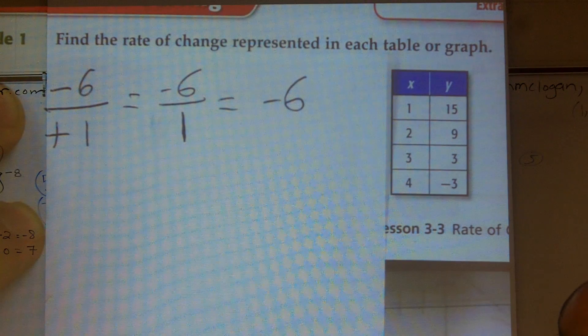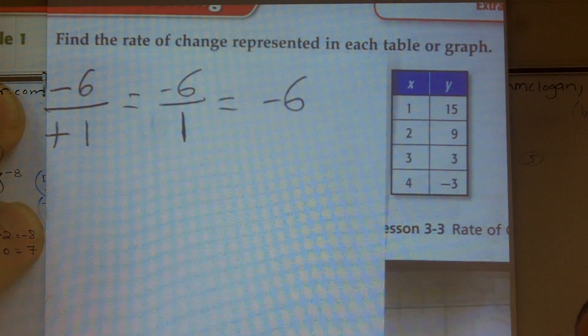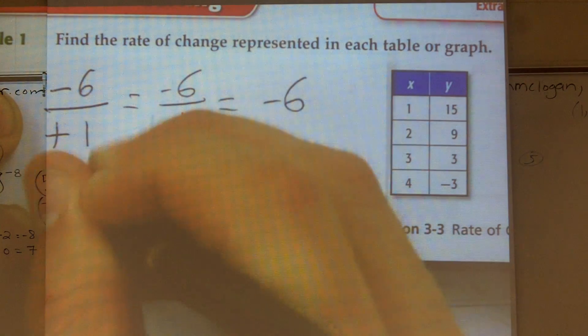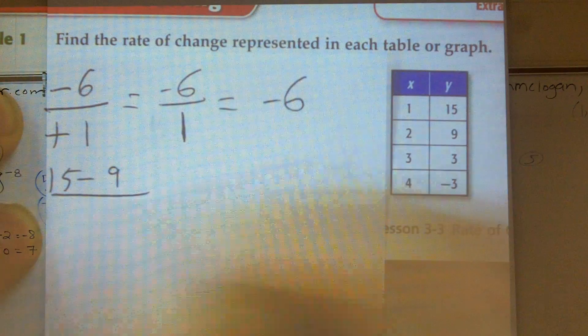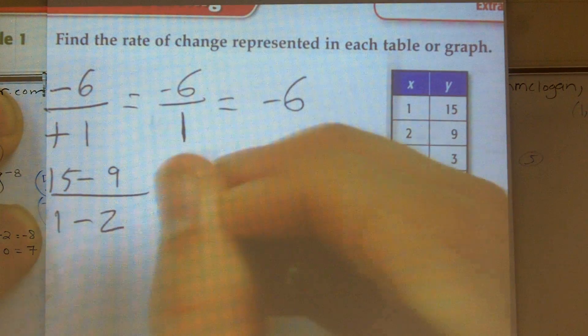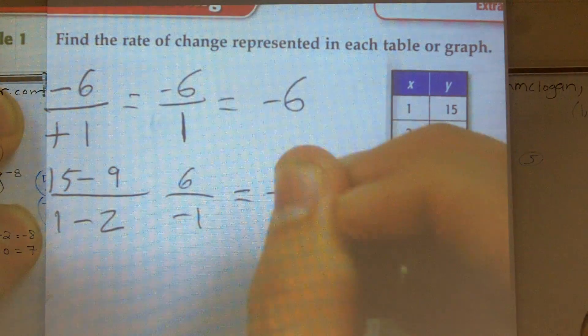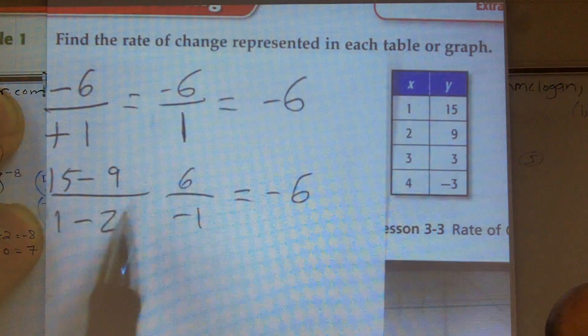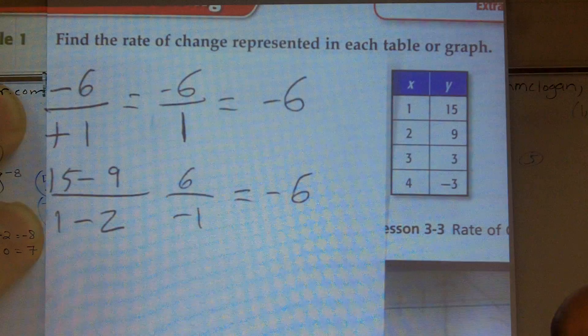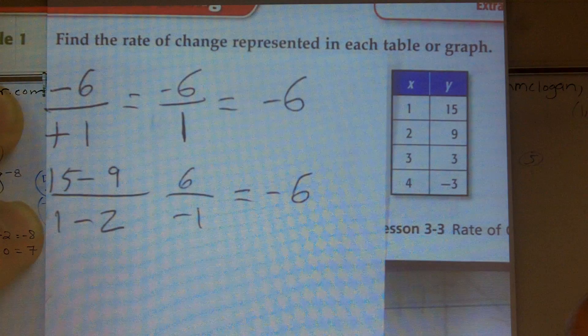So if I'm saying what is the change or the difference in two y values, you could also just say 15 minus 9 over 1 minus 2. And here, again, what we'll get is a positive 6 over negative 1, which still equals a negative 6. So you can just subtract two values from your x and your y's, and you'll get the exact same answer.